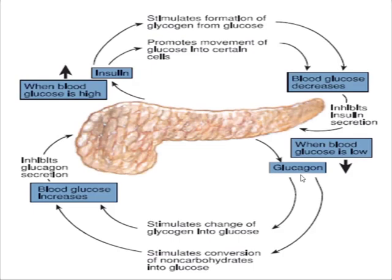There is a negative feedback system that regulates the secretion of glucagon and insulin to maintain the concentration of glucose. When blood glucose is high, the pancreas secretes insulin. Insulin stimulates the formation of glycogen from glucose and promotes the uptake of glucose molecules into the cells, thereby decreasing the concentration of glucose in the blood.